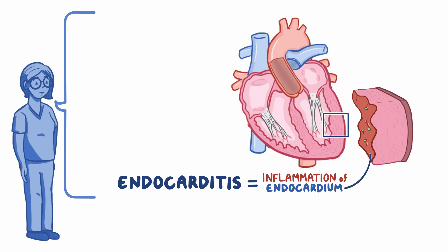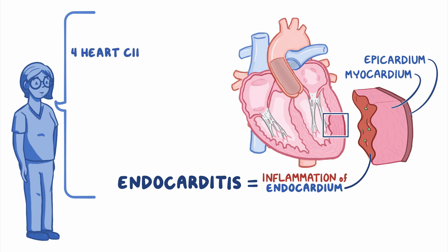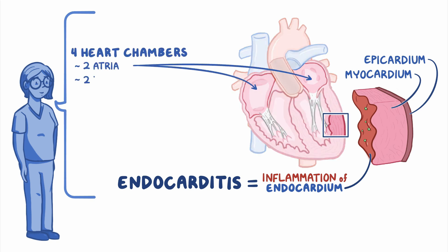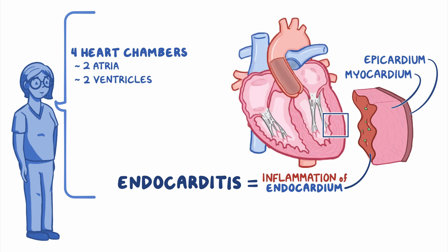The heart wall is made of three layers. The outer layer is the epicardium, the middle layer is the myocardium, and the inner layer is the endocardium. These layers line the four heart chambers, which are the two atria and two ventricles. The endocardium also lines the heart valves at the end of each chamber.